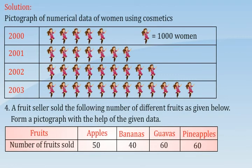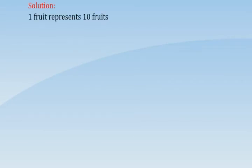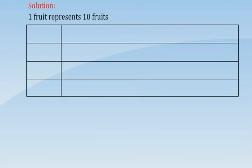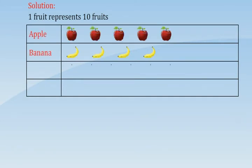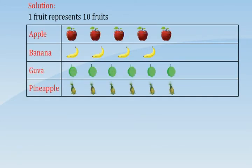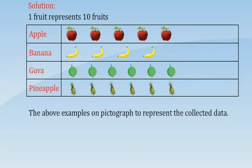A fruit seller sold the following number of different fruits as given below. Form a pictograph with the help of the given data. Solution: one fruit symbol represents 10 fruits. Apple, banana, guava, pineapple — the above examples show pictographs used to represent the collected data.